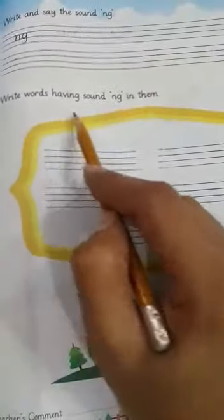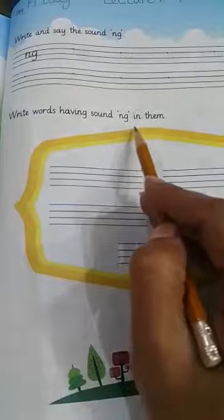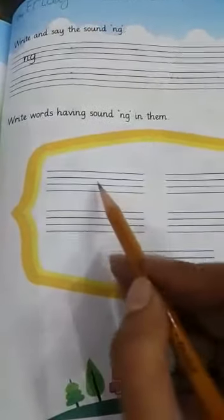Now turn to your book, page number 93. Write and say the sound ng. Write words having sound ng in them: ring, king, singer, finger. Thank you.